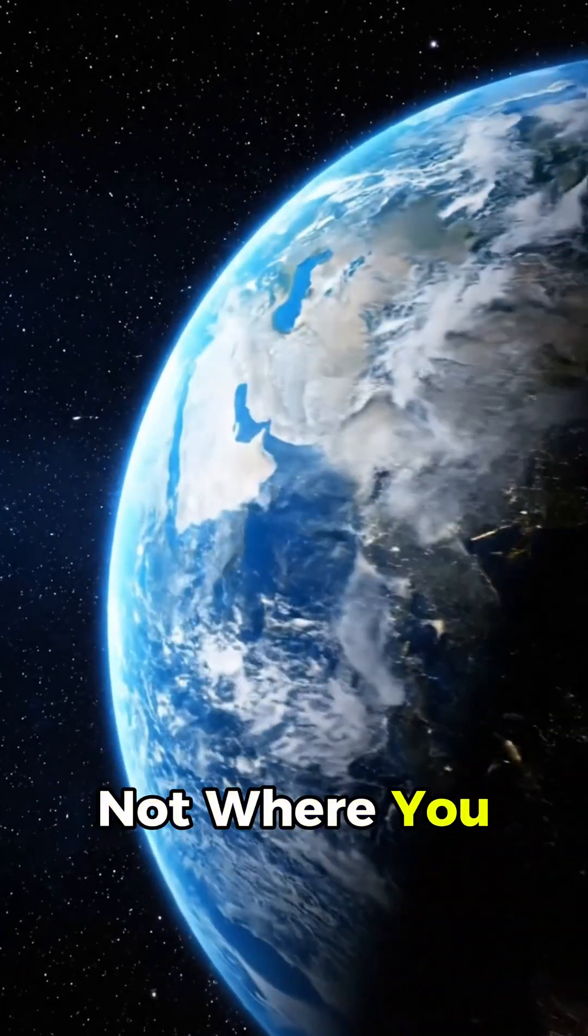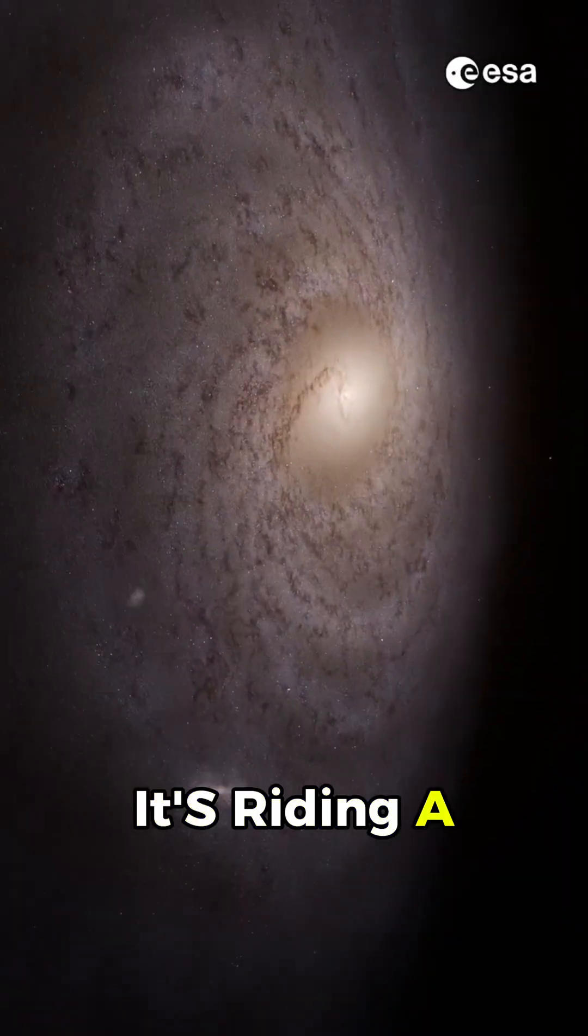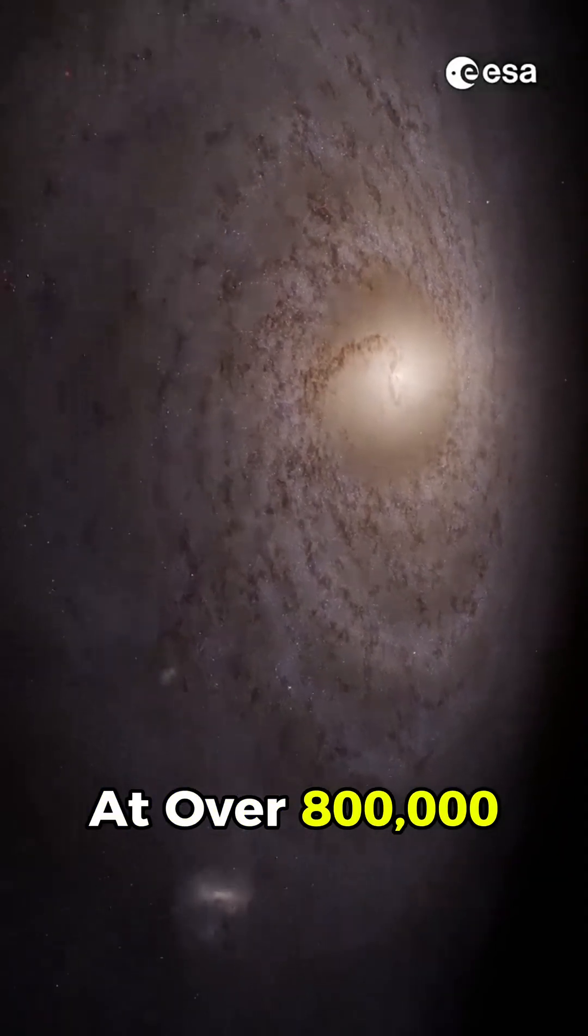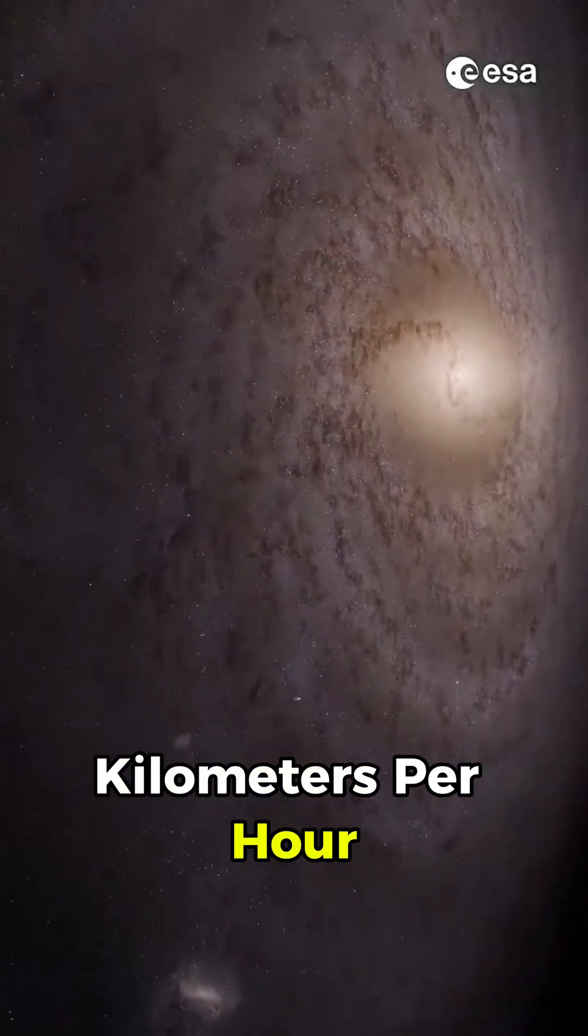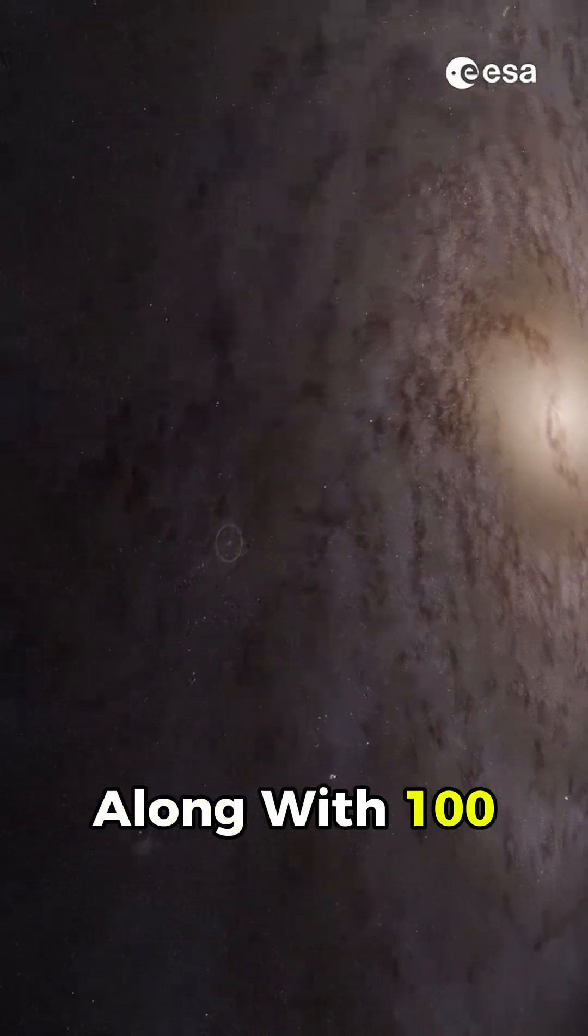You're here, but not where you think, because Earth isn't just spinning in space. It's riding a cosmic highway at over 800,000 kilometers per hour, orbiting the center of the Milky Way along with 100 billion other stars.